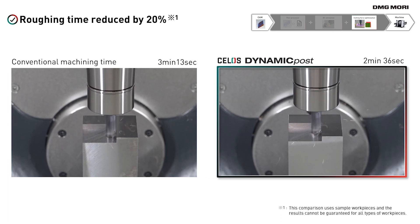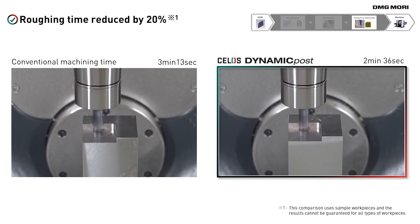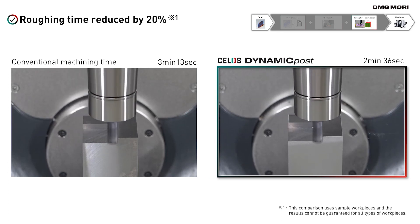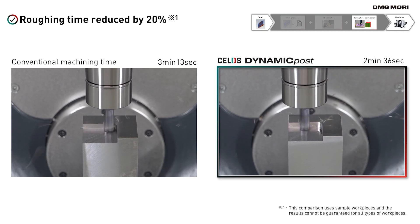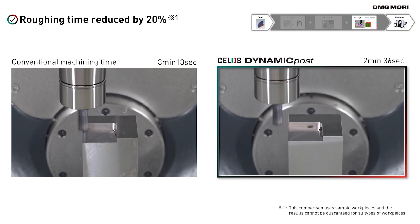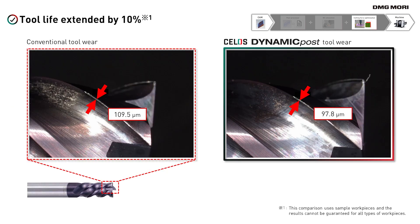This cutting force optimization can reduce machining time by 20%, even during roughing of simple shape parts. By calculating points of high cutting load and adjusting the feed rate accordingly, CELOS Dynamic Post can avoid tool damages, extend tool life, and eventually reduce machining cost.